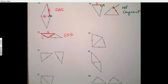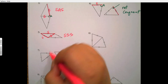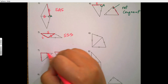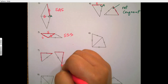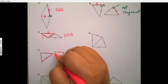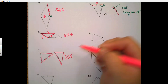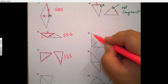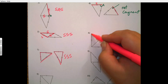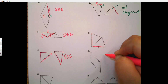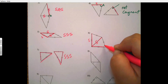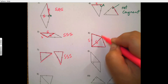Moving to number five: I see side, side, side — so I have side-side-side. Skipping to number seven: I see side, side, side — so again I have side-side-side.